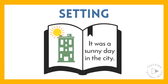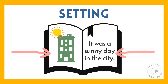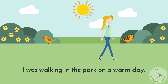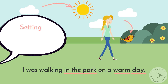You can determine the setting of a story by looking at the illustrations and finding information in the text. Let's try it. I was walking in the park on a warm day. How would you describe this setting? The text tells you I'm in a park, it's warm, and it's daytime. The illustration shows flowers, birds, and the sun. I think it might be spring, so we could describe the setting as a warm spring day in the park.